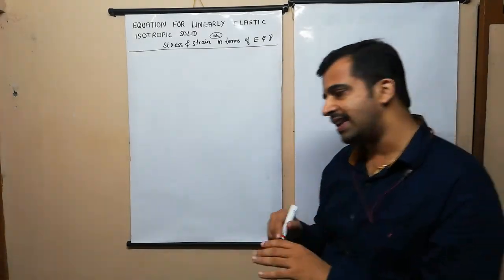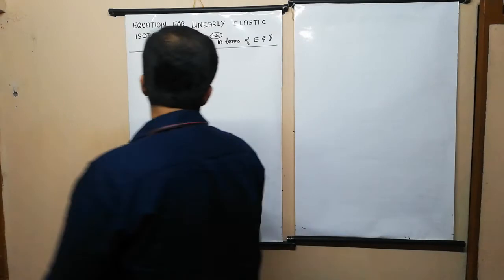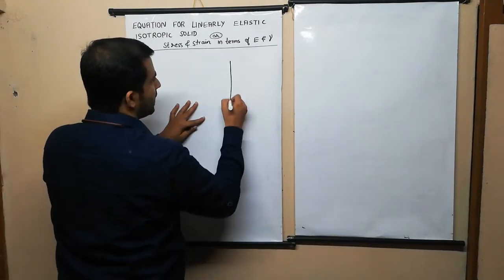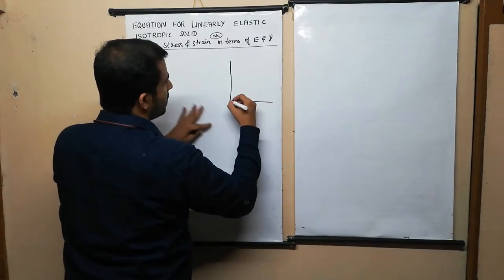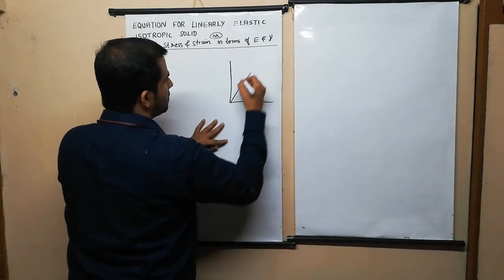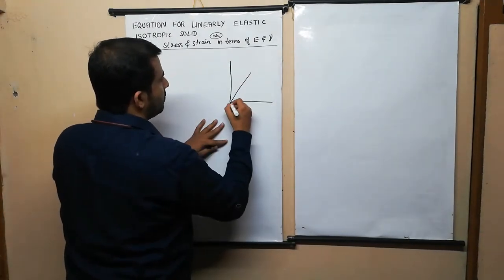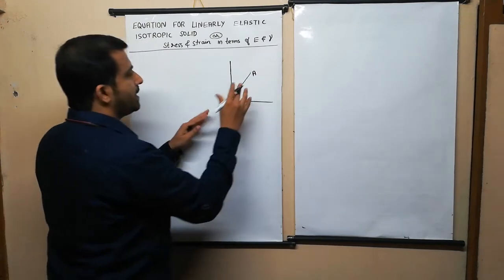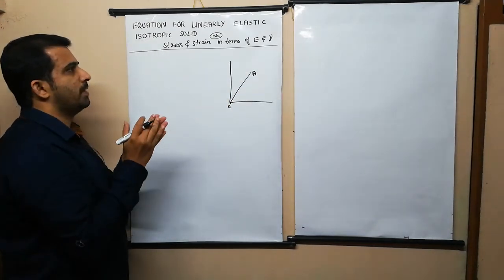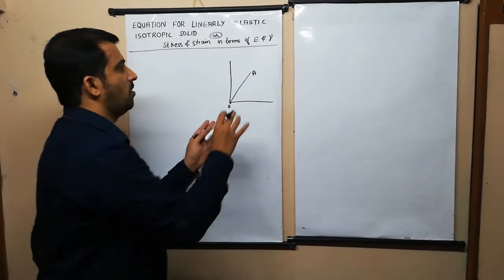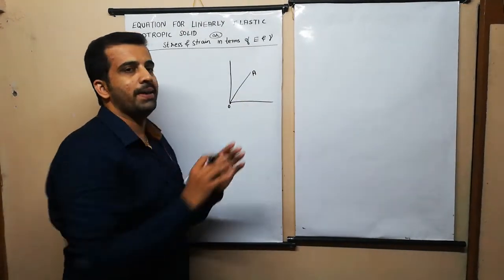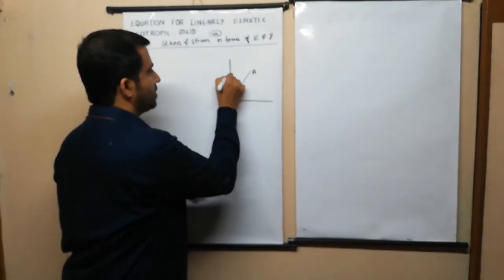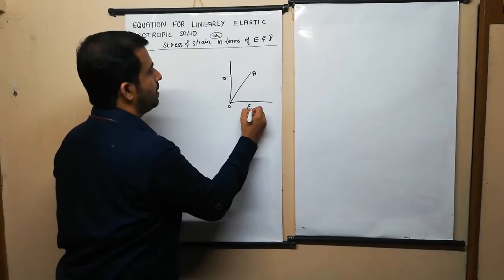What is a linearly elastic material? From the stress-strain diagram we understood that within the region OA, the material will be perfectly elastic, or linearly elastic.